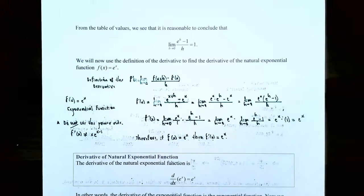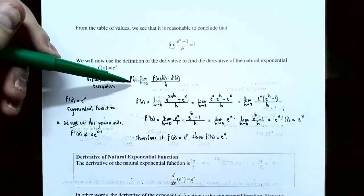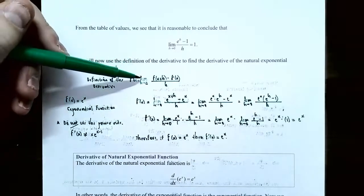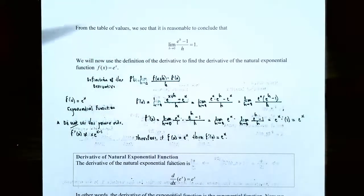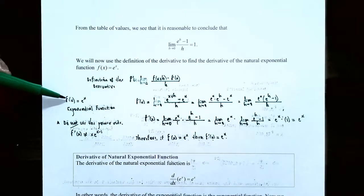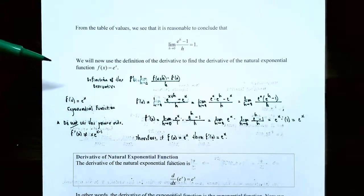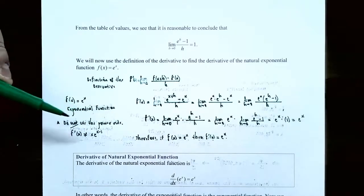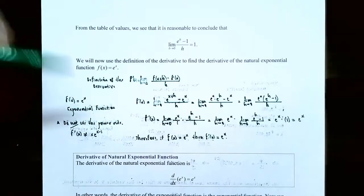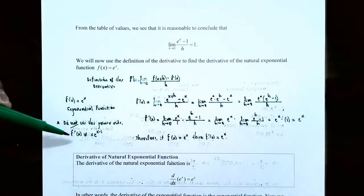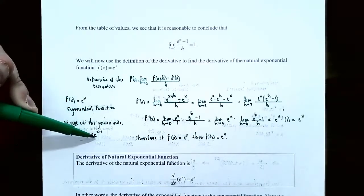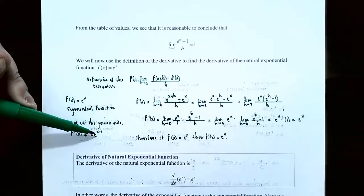Remind ourselves: the derivative f prime of x is the limit as h approaches 0 of the difference quotient — f of x plus h, subtract f of x, all divided by h. If your function is f of x equals e to the x, notice you cannot use the power rule. With the power rule, the base is the variable and the exponent is a number, but here the base is a number and the variable is the exponent.